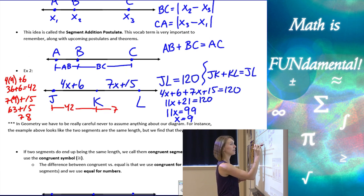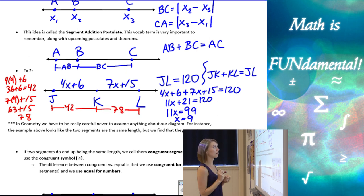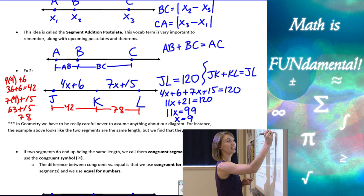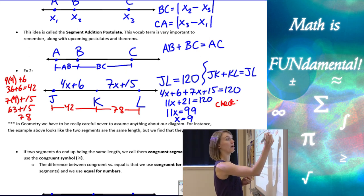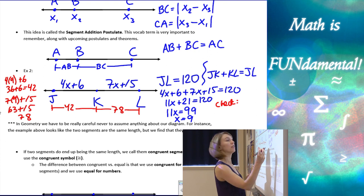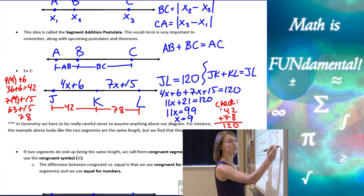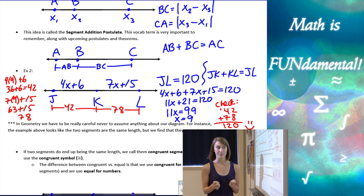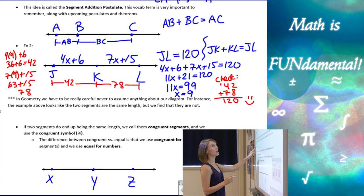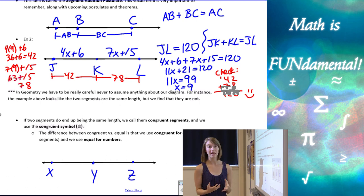So this is going to be 78 here for KL. And if I add those two things together just to check my work, I should get 120. So let's see, 42 plus 78. We add those together, carry the 1, and I have 120, which is awesome for us. So I've used the segment addition postulate to find the length of the pieces of the segment that I wasn't given.